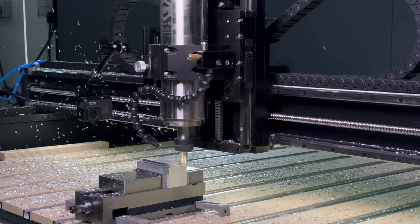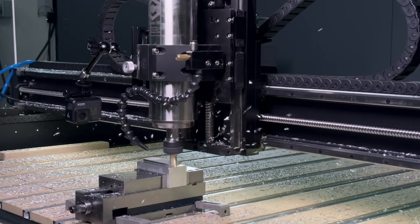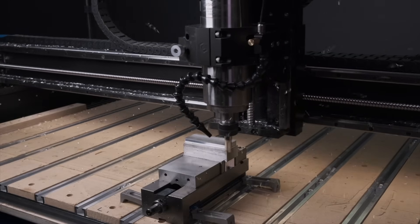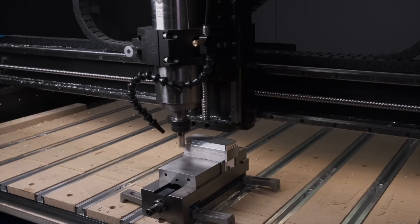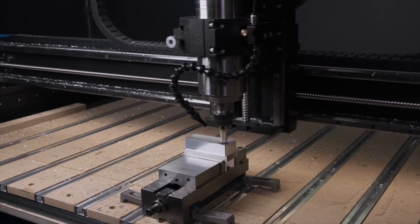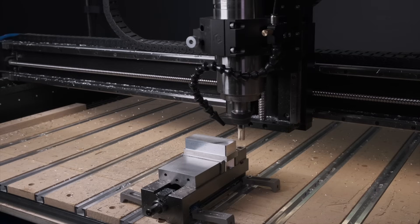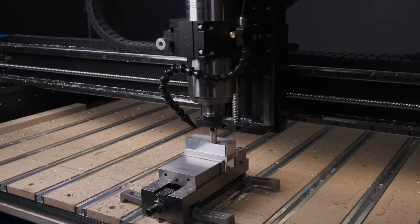So let's do some empirical testing to see just how precisely the Shapeoko can move. I'm going to set up an engraving test here on the same size piece of aluminum we previously machined. This makes it easy for me to mill the face of the block to get it perfectly level. This is important because it guarantees the depth of our engravings will be consistent.